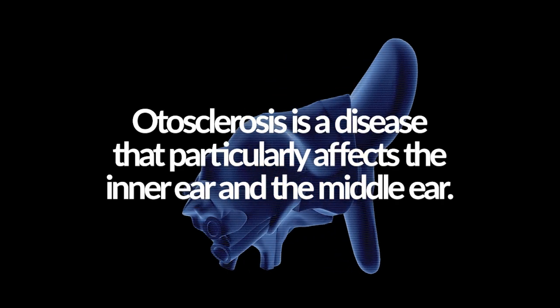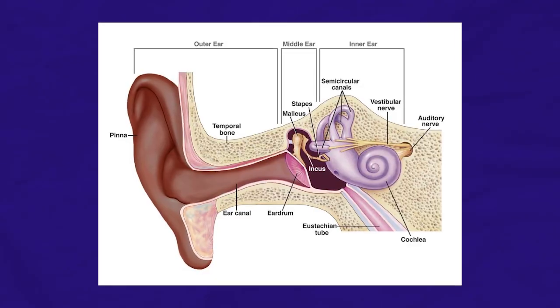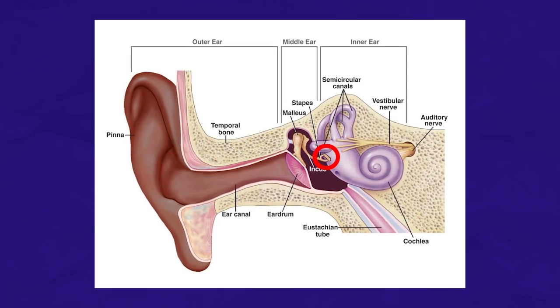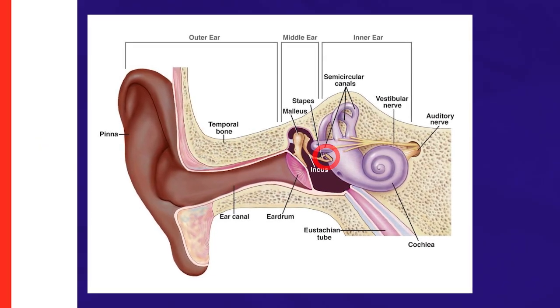Otosclerosis is a disease of the ear that particularly affects the inner ear as well as the middle ear. The middle ear houses the three smallest bones in our body — the incus, the malleus, and the stapes — which are collectively known as the ossicular chain. Otosclerosis affects the stapes, specifically its footplate, which is the bottom part that makes contact with the oval window, an opening that connects the middle ear to the inner ear.